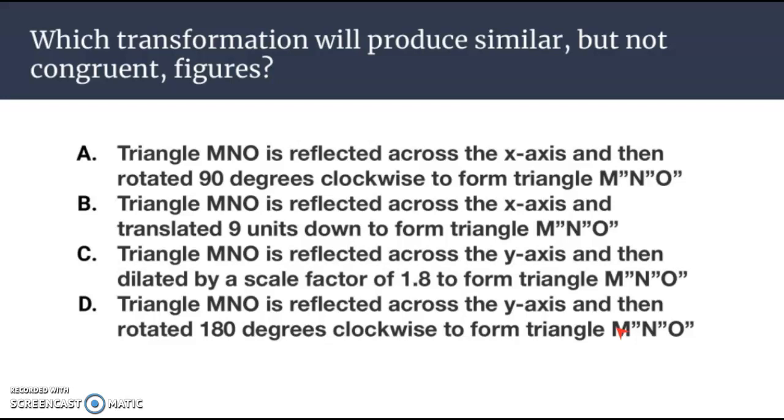The main thing to know with some of these examples is, the question is going to be asked, which transformation will produce similar but not congruent figures? Similarity means the same shape but not the same size. And the key element of this when dealing with these transformations, whenever an object is dilated, that means it's made bigger or made smaller, that produces a similar image.